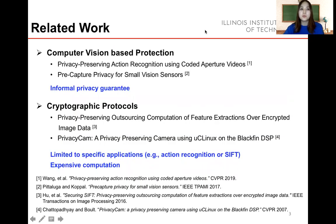I will introduce some related research work, such as the privacy-preserving system for video action classification and preserving privacy by defocusing in the computer vision area. However, this protection cannot provide formal privacy guarantees. Other work involves cryptographic protocols for video, such as using the SIFT algorithm over encrypted images and privacy cam. Regions of interest are identified before being encrypted using AES. They only consider images and specific applications, and the computation cost is very expensive.